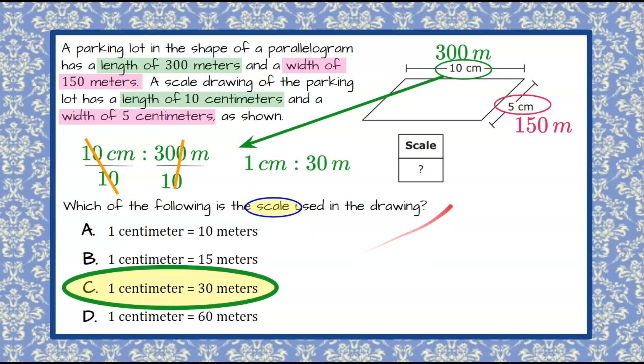Now, let's check our width, just to make sure that we did our math correctly. So we have our scale drawing to our actual parking lot, so that gives us a scale ratio of 5 centimeters to 150 meters. Again, we need to simplify this so that it's 1 centimeter.